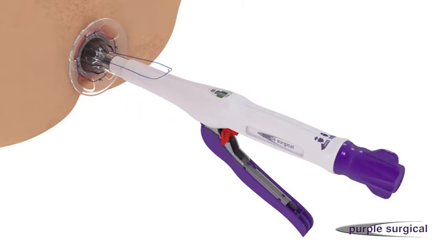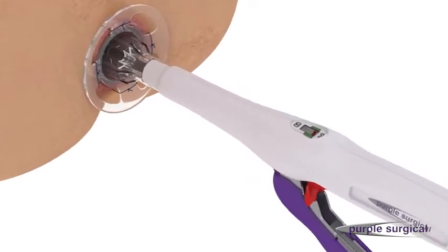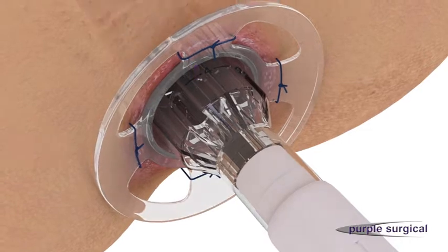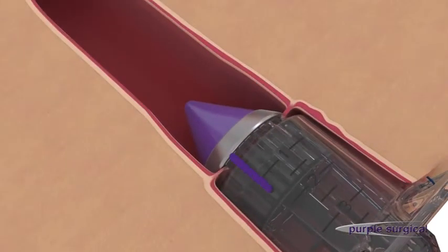Fully close the device by rotating the wingnut clockwise whilst ensuring the 4cm mark is level with the anal verge. The staple line should be at least 2cm above the dentate line.